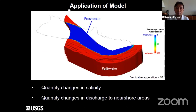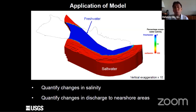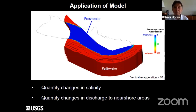That demonstrates the usefulness of this model — it can simulate changes in water quality that occur over time or under different pumping conditions. What I'm going to show next is several applications of the model, looking at how salinity in some of the production wells changes in response to changes in withdrawal, and also how groundwater discharge to nearshore areas changes with different pumping scenarios.